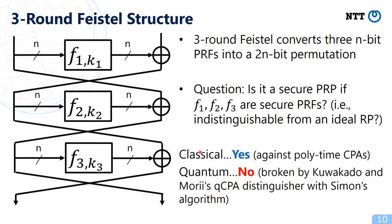In the classical setting, the answer is yes — the three-round Feistel structure is proven secure against polynomial time CPA. However, in the quantum setting, the answer is no, because Kuwakado and Mori showed that by using Simon's algorithm it can be distinguished from a random permutation in polynomial time.